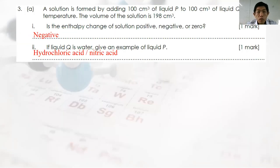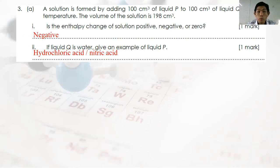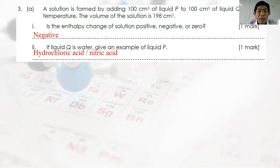Structure Question 3a: When 100 cm³ of P is added to 100 cm³ of Q, the total volume is only 198 cm³ — less than the expected 200 cm³. This means stronger intermolecular forces are present, indicating negative deviation. Therefore the enthalpy change of mixing is negative — the process is exothermic.